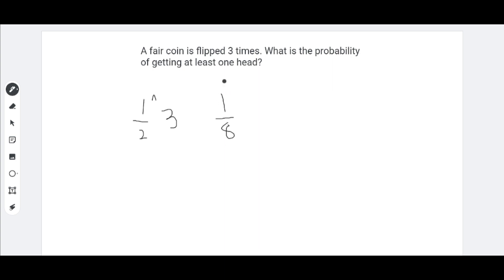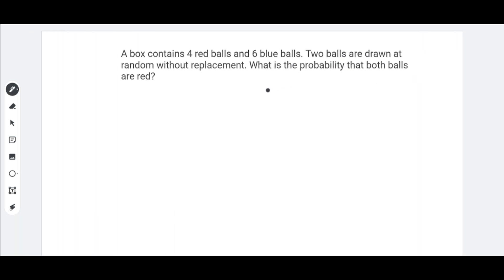Now, if we subtract 1 eighth from 1, we would get 7 eighths. So, we have a 7 eighths chance of getting at least 1 head when flipping a coin 3 times. Now, let's move on to the last problem in the easy section.